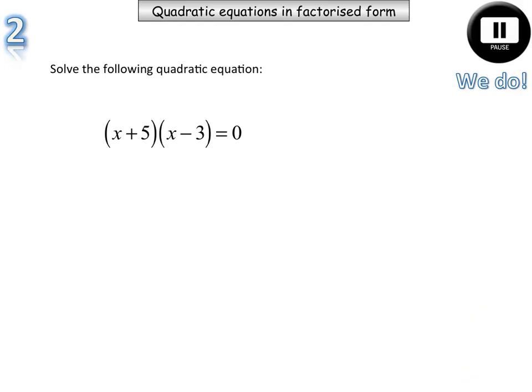Okay, pause the video and set your work out like the previous example and see what you end up getting. Okay, so our two linear factors will be x plus five is equal to zero and x minus three is equal to zero.